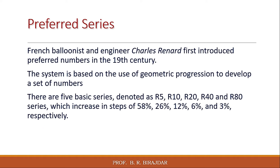There are five series, denoted by R5, R10, R20, R40, and R80. These are the five series, and each increases by an incremental percentage: 58%, 26%, 12%, 6%, and 3% respectively. This means in the R5 series, from one value to the next it increases by 58%, in R10 by 26%, and so on. These are the five different series that Charles Renard derived.